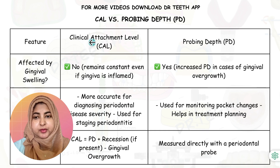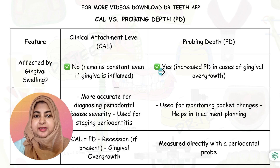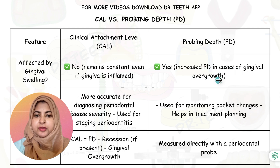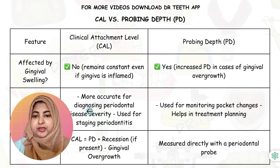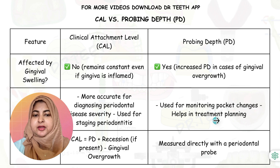Is the clinical attachment level affected by gingival swelling? No, it remains constant even if the gingiva is inflamed. But probing depth is affected by gingival swelling — we will have increased pocket depth in cases of gingival overgrowth. The clinical attachment level is more accurate for diagnosing periodontal disease severity and is used for staging periodontitis, while probing depth is used for monitoring pocket changes and helps in treatment planning.